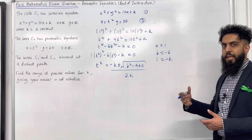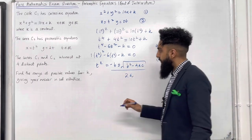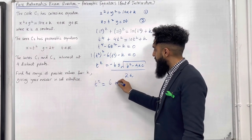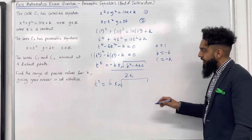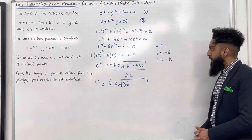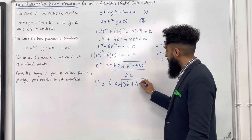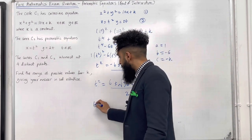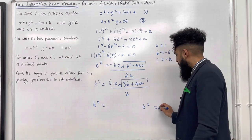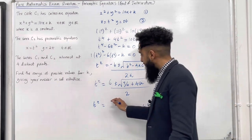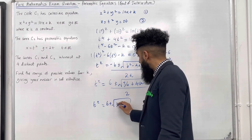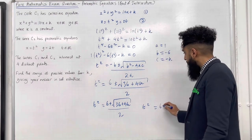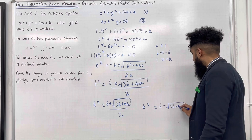Substituting a, b, and c into the quadratic formula — t squared equals minus b plus or minus square root of (b squared minus 4ac) all over 2a — we get t squared equals 6 plus or minus square root of (36 plus 4k), all over 2. This gives two expressions: t squared equals (6 plus square root of (36 plus 4k)) over 2, or t squared equals (6 minus square root of (36 plus 4k)) over 2.